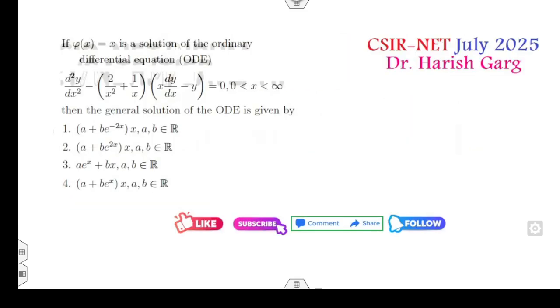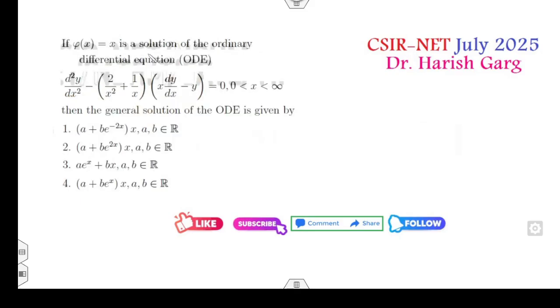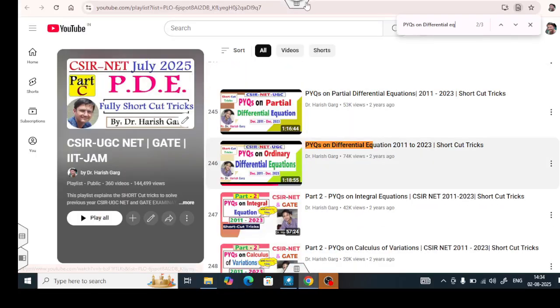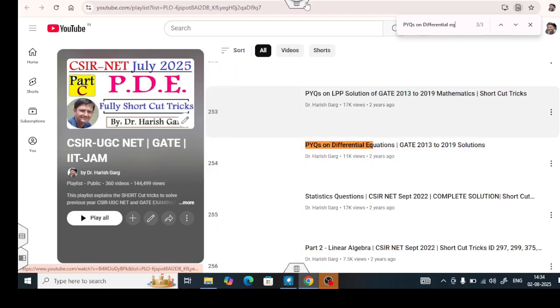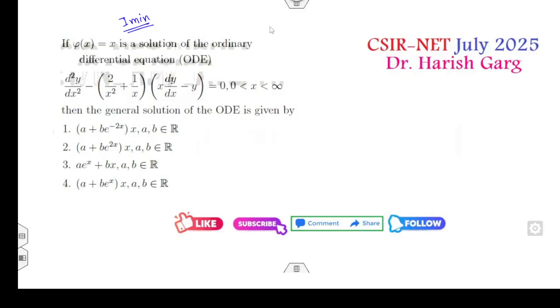Now in this part B differential equation questions, there are basically two parts: one is the reduction of order and second one is related to the Sturm-Liouville problem. All these questions are very easy and you can get the answers within one minute. The similar kind of question I already explained in my last PYQs on differential equations. If you watch my lectures on IIT JAM and GATE, all these last 17 years papers, the same questions I have already solved.